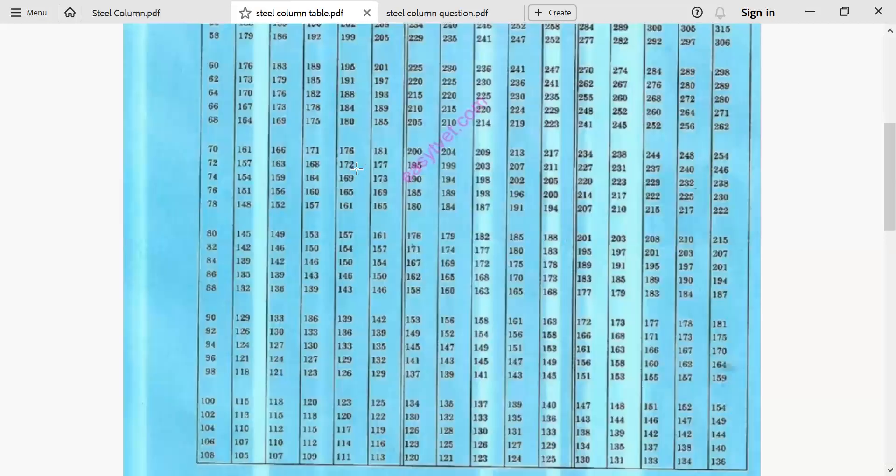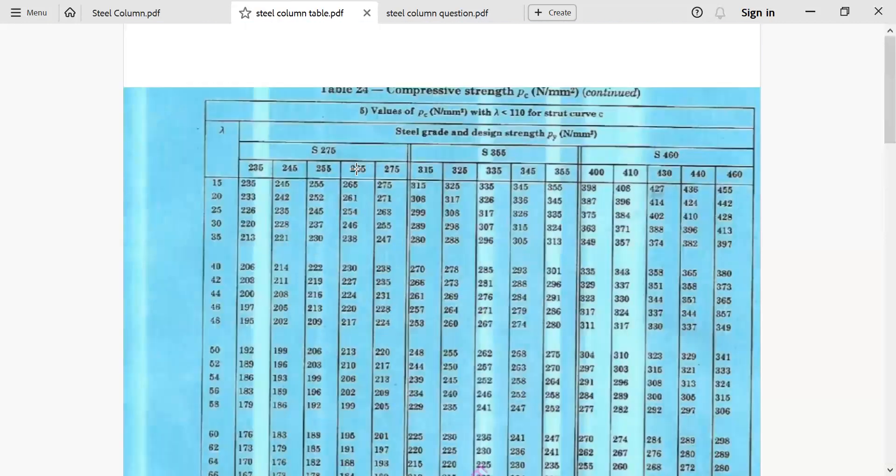So, we'll come here. Looking at this table, the first column is slenderness ratio, then the second part we have S275. S275 is where we have our PY. But in S275, we have 235, 245, 255, 265, and 275. Remember, PY is 275.